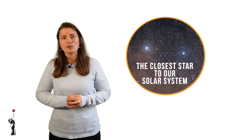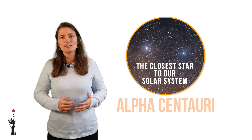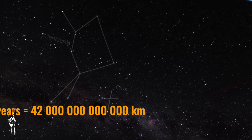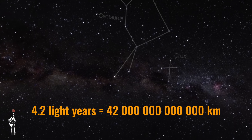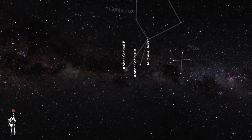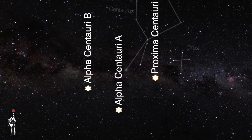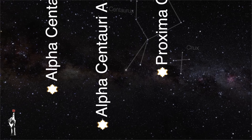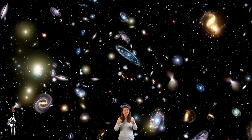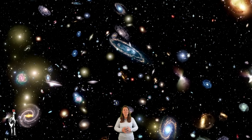The closest star to our solar system is Alpha Centauri, about 4.2 light years away — that's about 42 trillion kilometers from Earth. Alpha Centauri is actually part of a star system with three stars, and it is one of the brightest stars we can see from the Southern Hemisphere. Our Milky Way is just one of billions of galaxies scattered across the universe. Do you feel small? Because we are very, very small compared to everything that surrounds us.